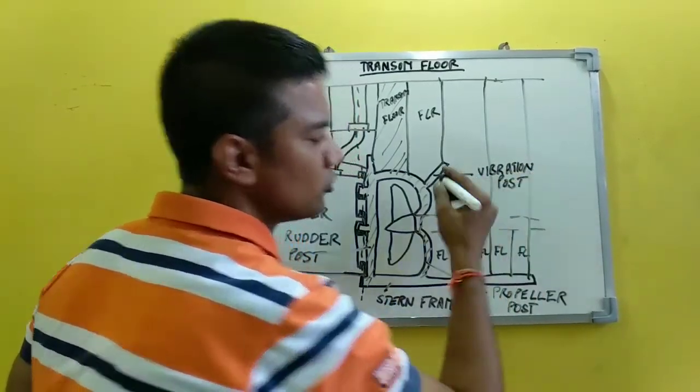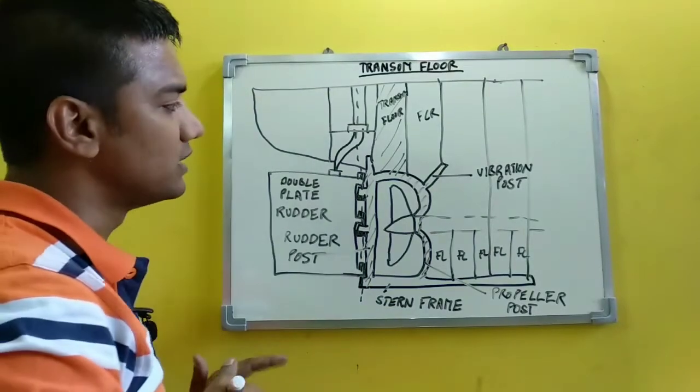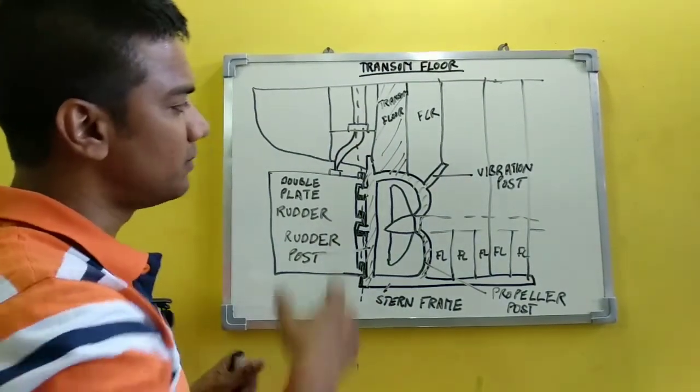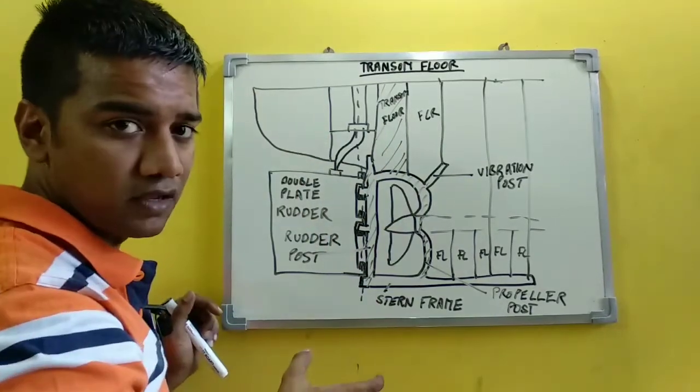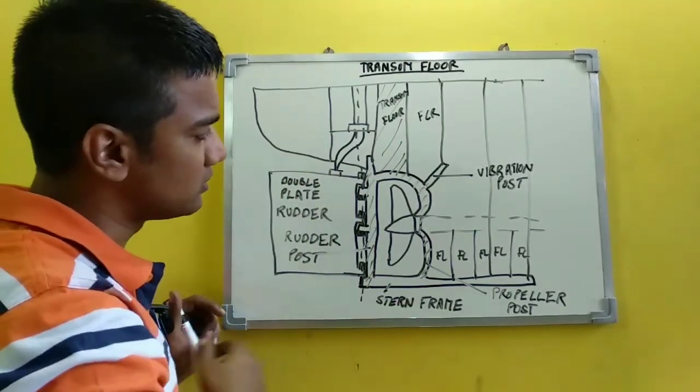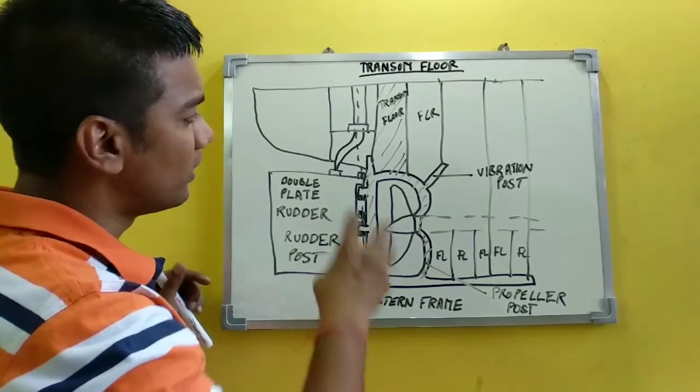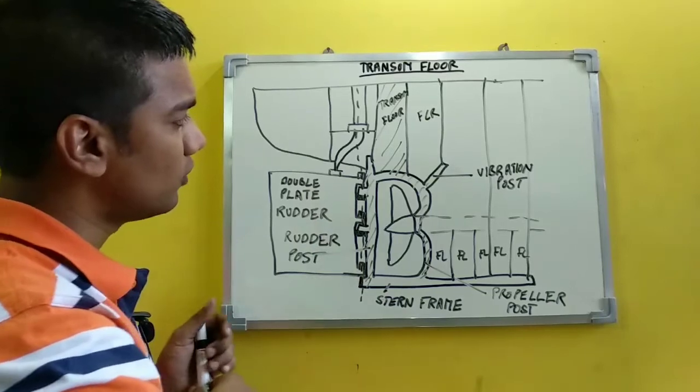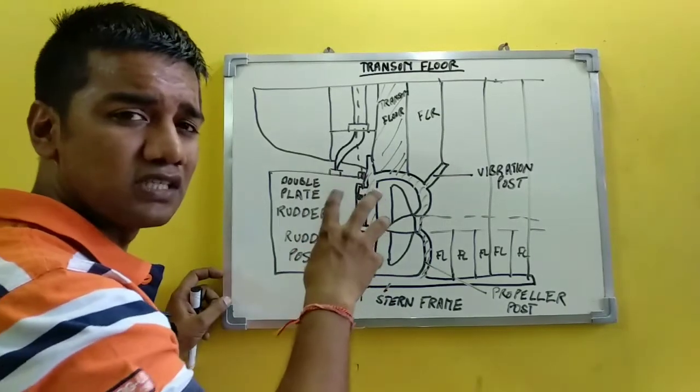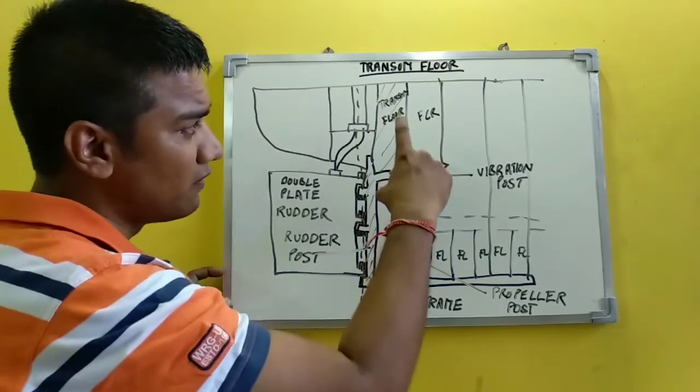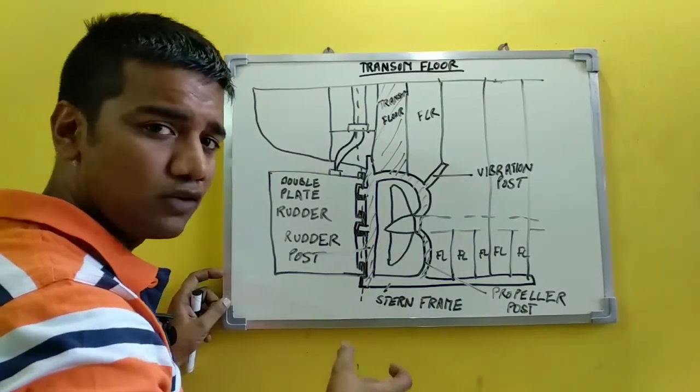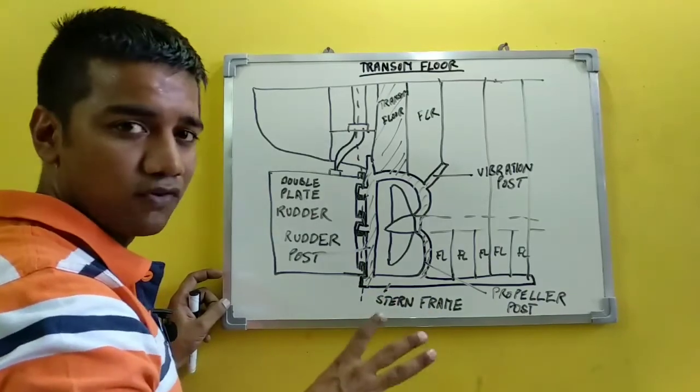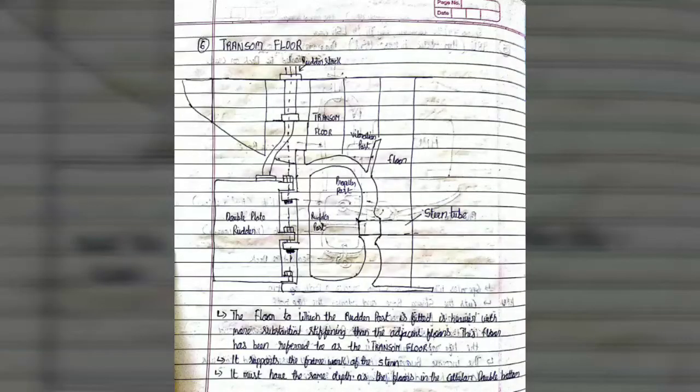Now the function of vibration post is to reduce the vibration at the stern. The transom flow supports the framework of the stern structure and provides strengthening to the stern as well. It is much more stiffened compared to the adjacent flows, and the depth of the transom flow is equivalent to the depth of the flows in the cellular double bottom. So this is all about your transom flow.